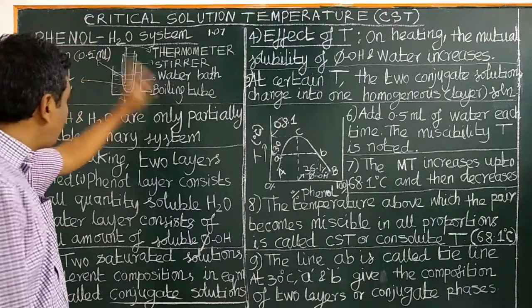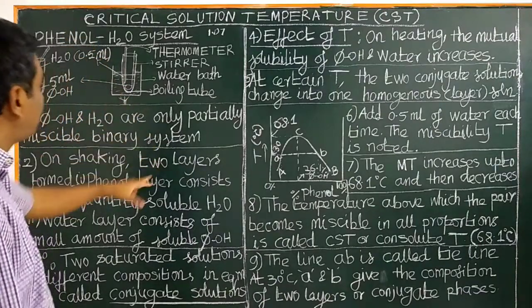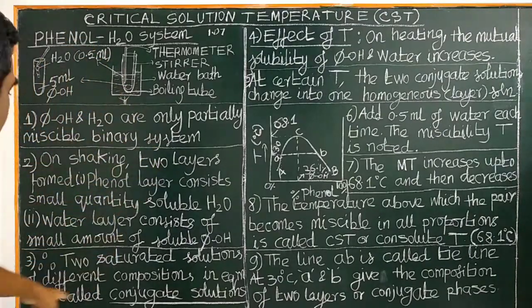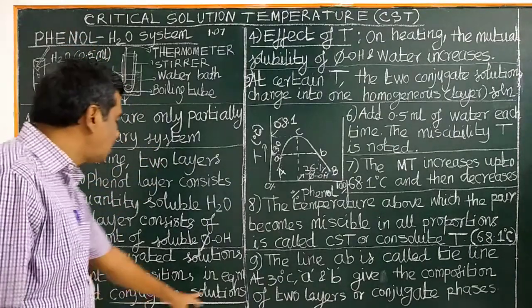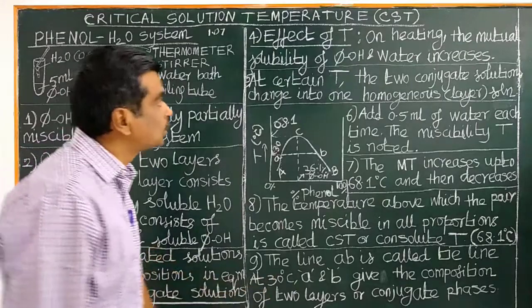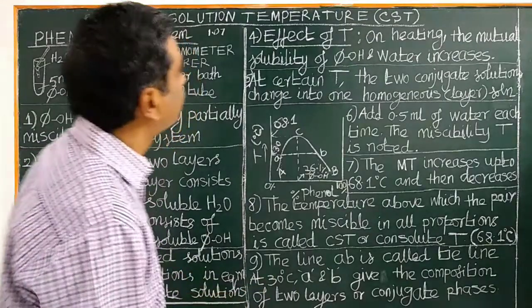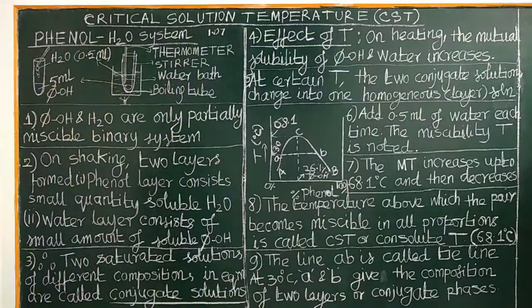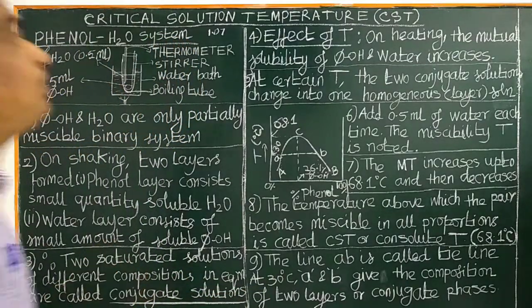Two different bubbles inside the equilibrium at a particular temperature are called conjugate solutions. What is the effect of temperature?